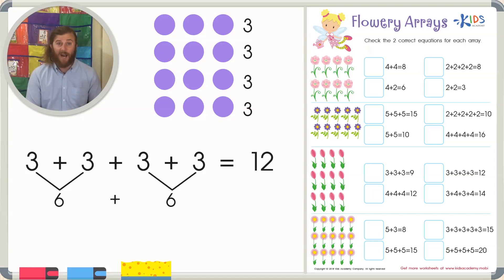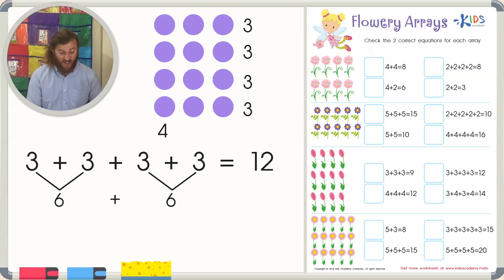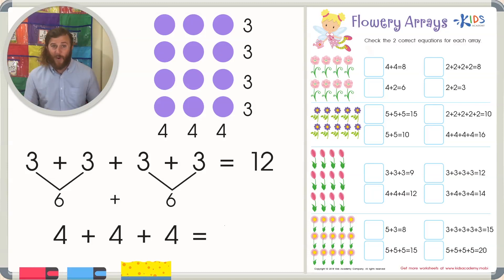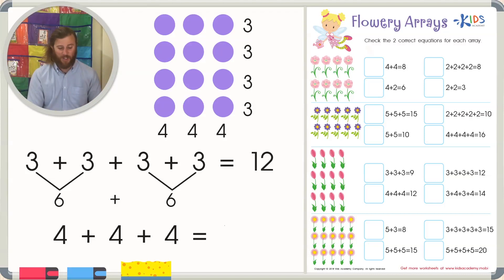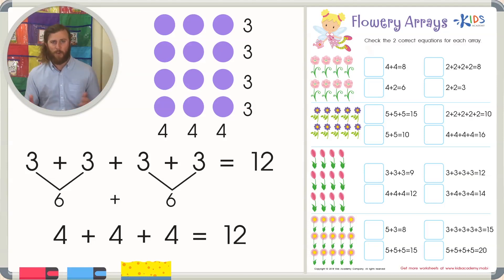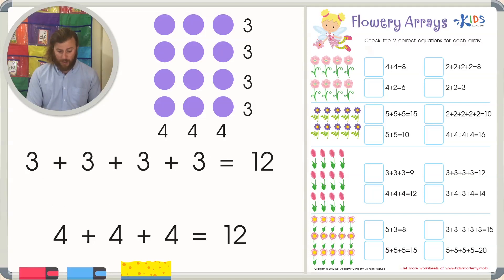There's another equation besides counting the rows — let's count the columns. In our first column I see there's four — one, two, three, four — and there's also four in our other columns. So we could also say four plus four plus four, and we know the total is twelve because there are twelve dots in total. So four plus four plus four also equals twelve.